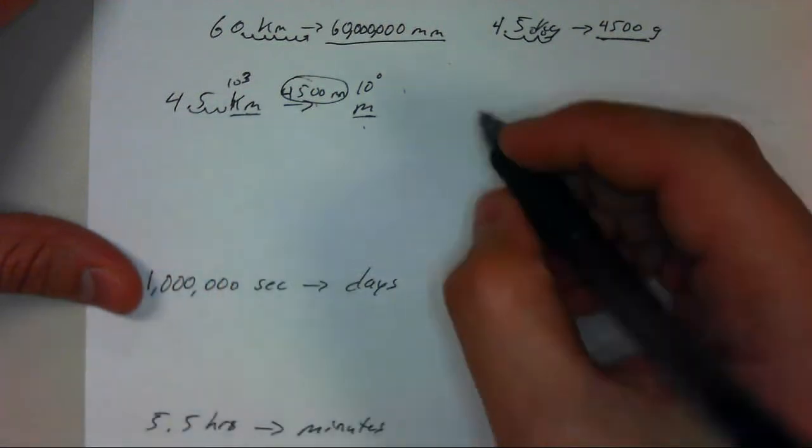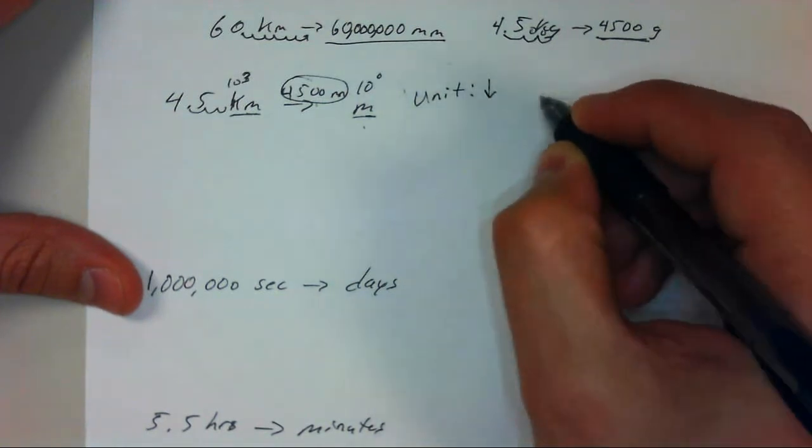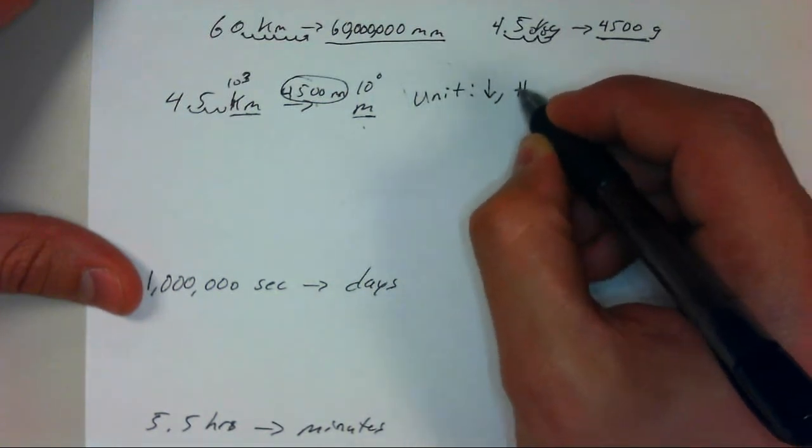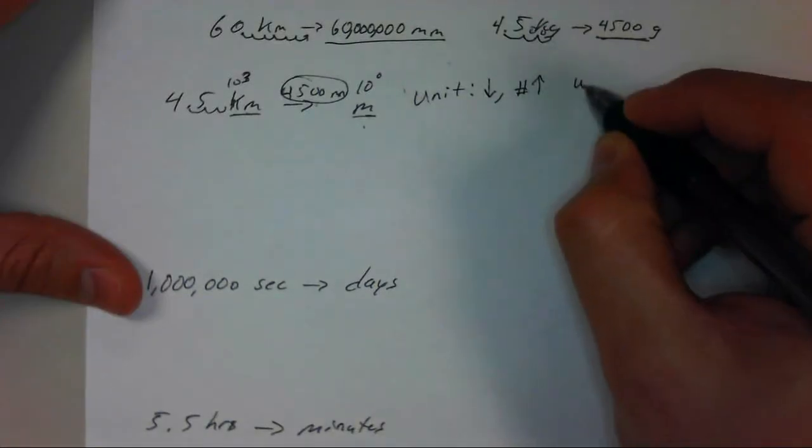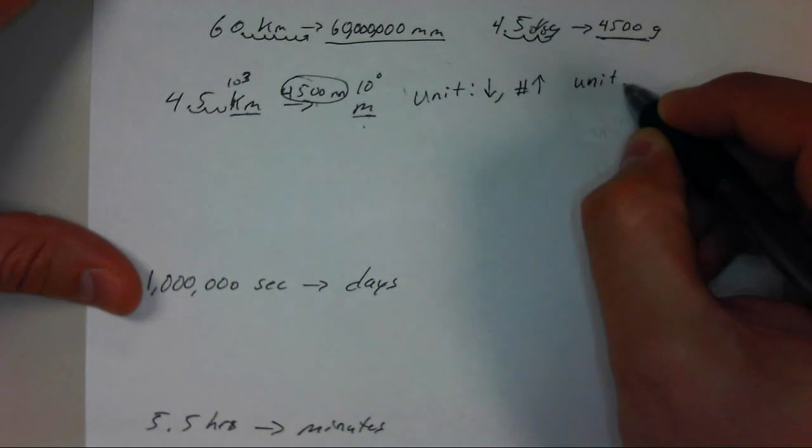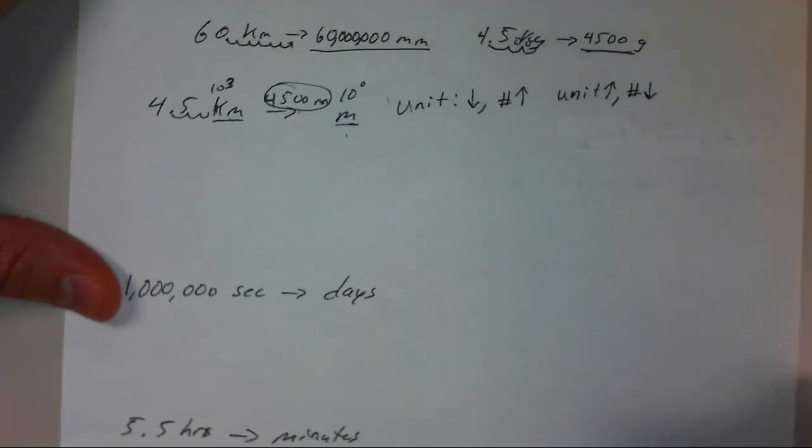So the number does opposite from the unit. So if the unit gets smaller, the number should get bigger. And likewise, if the unit gets bigger, the number should get smaller.